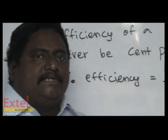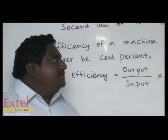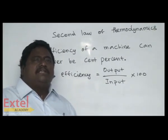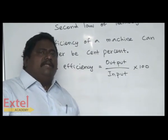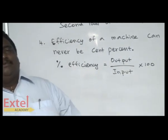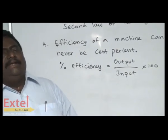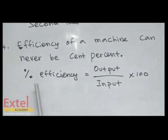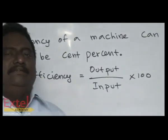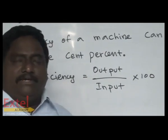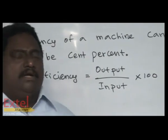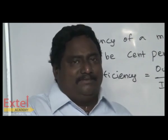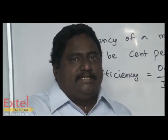What they are telling is, it cannot be 100 percent. When shall it be 100 percent? When all the input has been converted into output — when all the energy has been converted into work — then it is called 100% efficiency. You cannot find any machine which converts all the input into the output. This is impossible.